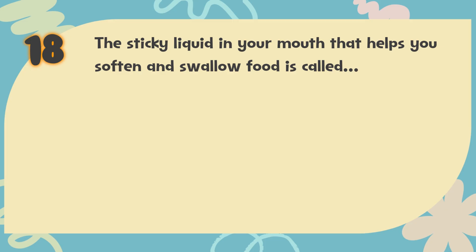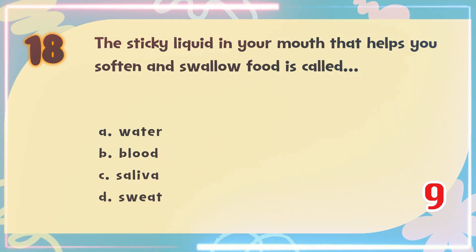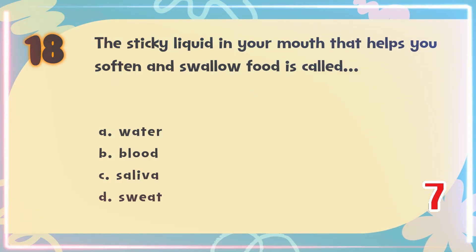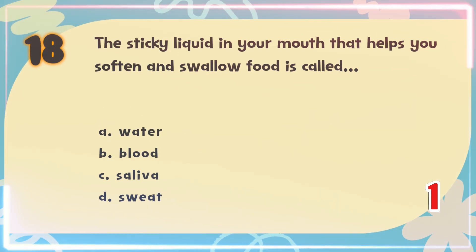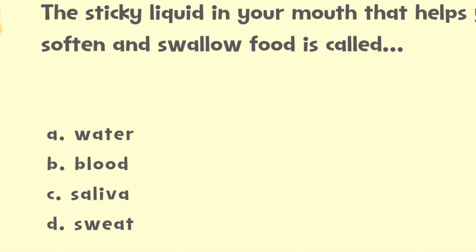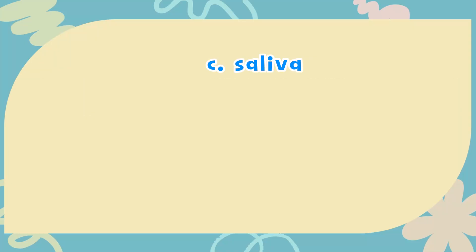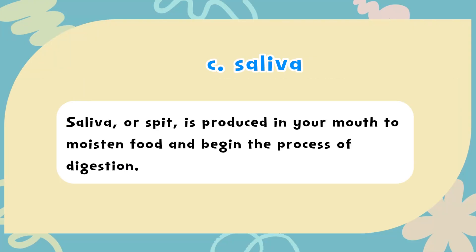Number 18: The sticky liquid in your mouth that helps you soften and swallow food is called — A. Water, B. Blood, C. Saliva, D. Sweat. The correct answer is C. Saliva. Saliva, or spit, is produced in your mouth to moisten food and begin the process of digestion.